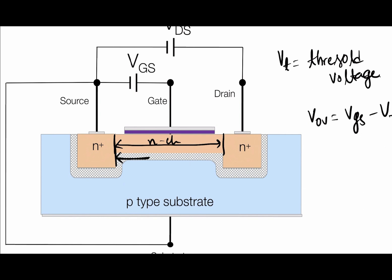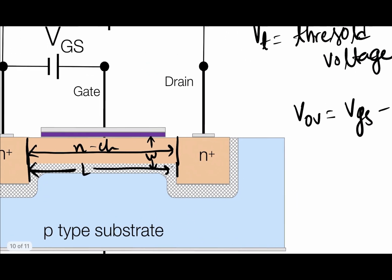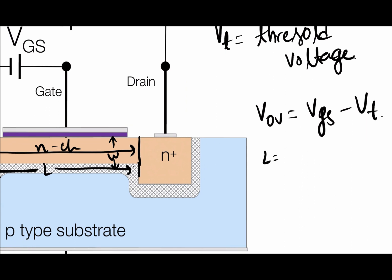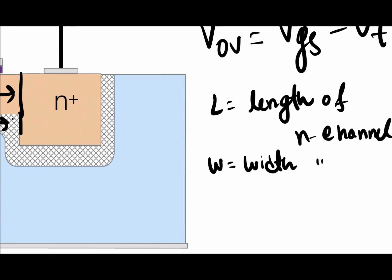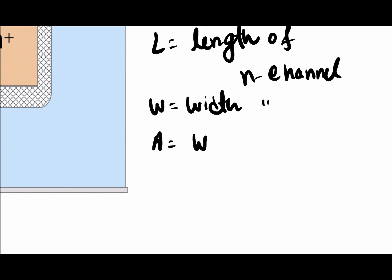The length of this channel is L and the width of this channel is W. So L is the length of the N-channel and W is the width of the N-channel. Therefore, the area A is equal to W multiplied by L.